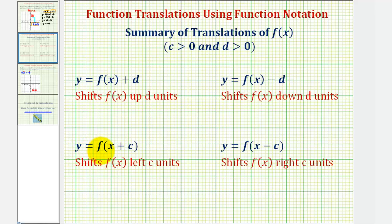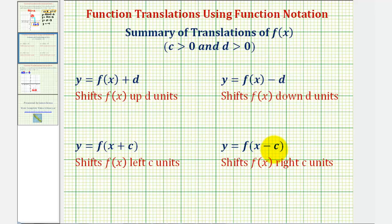But if we have y equals f of the quantity x plus c, notice how this plus c would affect the inputs into function f, and because we're adding c, we actually have to use smaller values of x to get the same inputs as the basic function f of x. So because we'd have to use smaller values of x, f of the quantity x plus c would actually shift f of x left c units. And if we had y equals f of the quantity x minus c, notice here we're subtracting c from x, therefore we need larger values of x to have the same inputs as the basic function f of x, so the graph of f of x is actually shifted right c units.